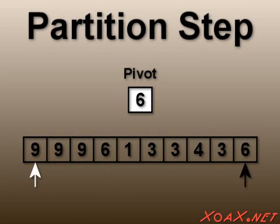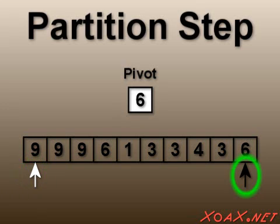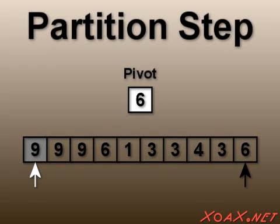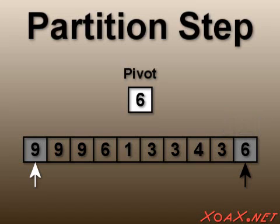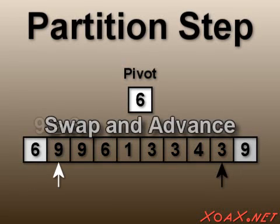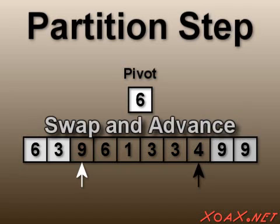Then we create two selectors: one for the beginning of the array, shown with the white arrow, and one for the end of the array, shown with the black arrow. These are used to mark the positions of the elements that we are checking. We move the first selector forward until we find an element that is greater than or equal to the pivot, and we move the second selector until we find an element that is less than or equal to the pivot. Notice that we show the selectors moving first, and then color the background gray to illustrate when the element is tested. After both selectors find an element, we swap the elements.